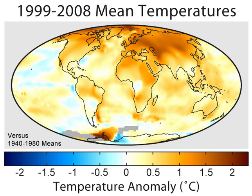Some climate scientists are increasingly of the opinion that the goal should be a complete restoration of the atmosphere's pre-industrial condition, on the grounds that too protracted a deviation from those conditions will produce irreversible changes.